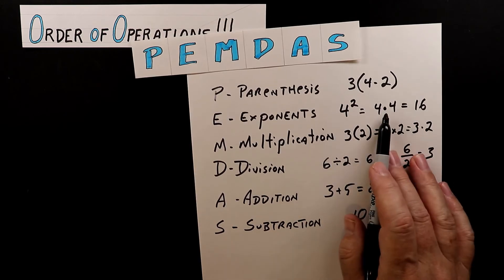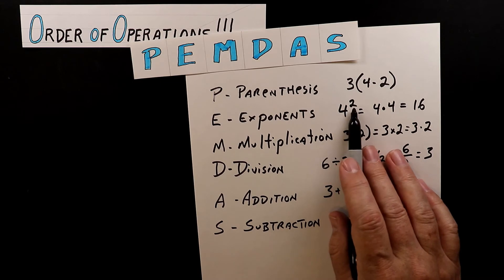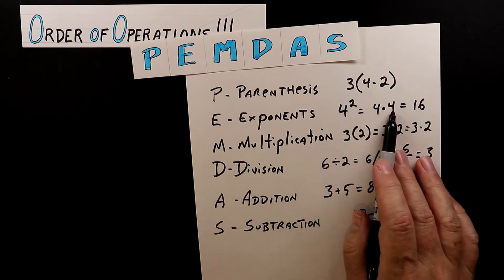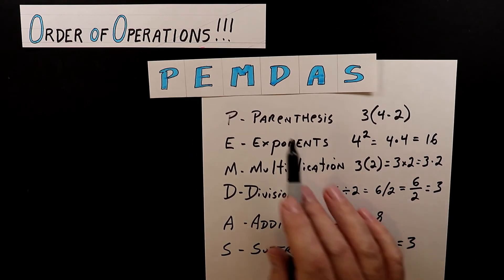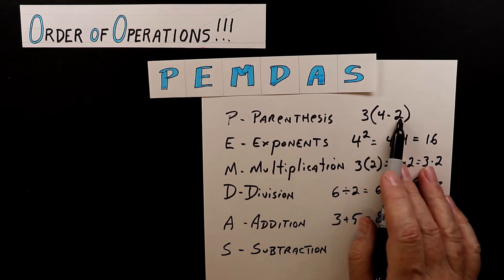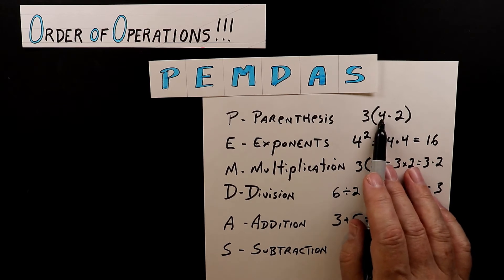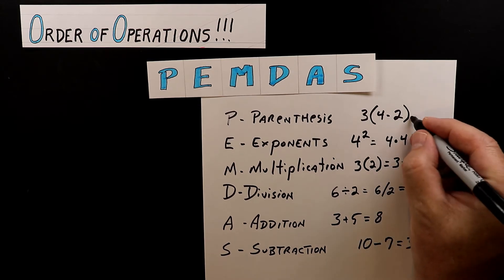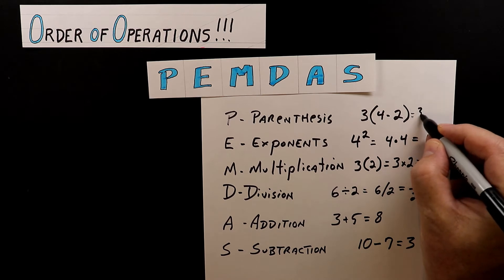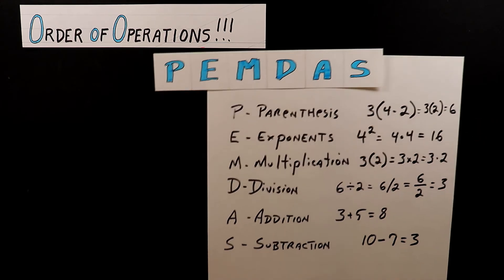So to recap: exponents — four squared, or four to the second power, is four times four, which equals 16. Parentheses is when you group things together and then execute those operations. So four minus two equals two, and three times two equals six.